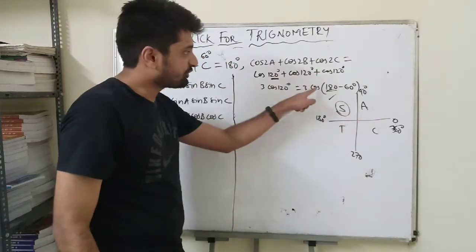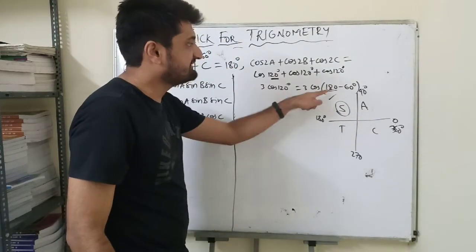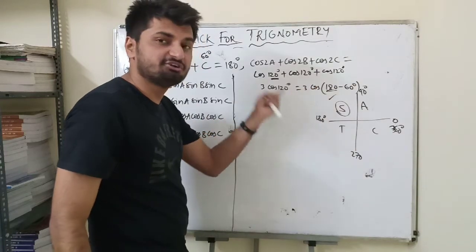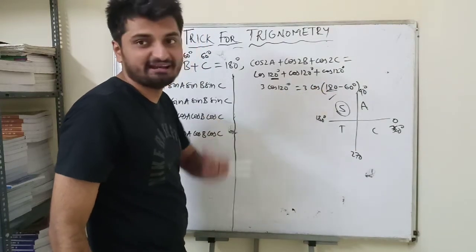So cos will be negative, and the cos won't change into its complement because 180 degrees is there.